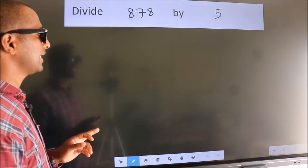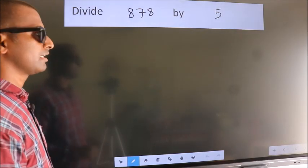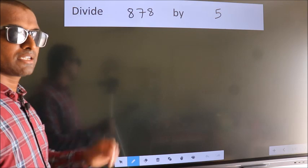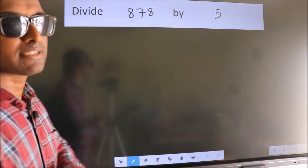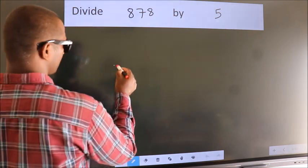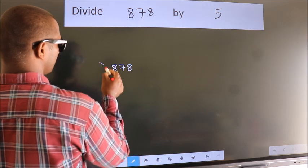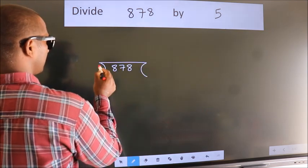Divide 878 by 5. To do this division, we should frame it in this way: 878 here, 5 here.